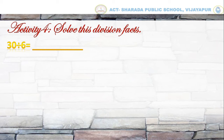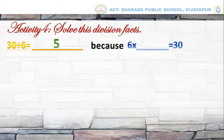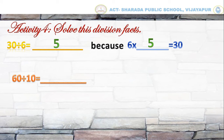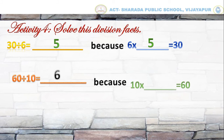Here we have to divide 30 by 6. Next, 60 divided by 10 we will get 6, because 10 times 6 is equal to 60.